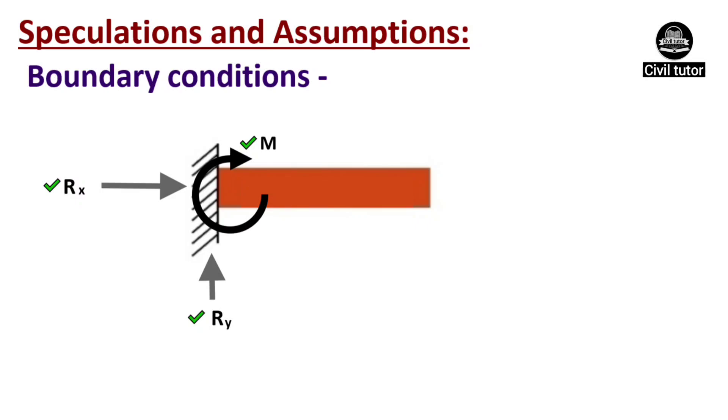If we talk about a member having a fixed end, the member cannot have any linear or rotational movement. The fixed support can develop resisting force as well as resisting moment in any direction.